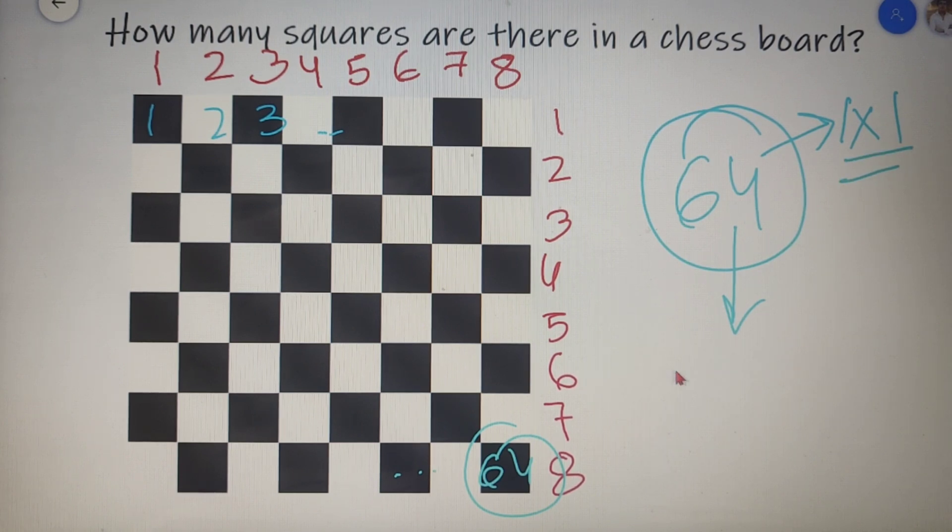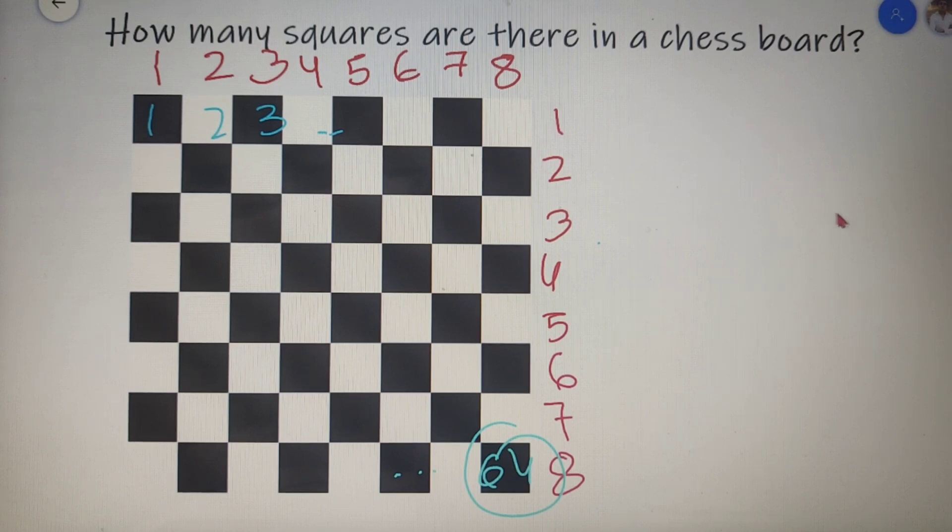It can also have squares of sizes 2 cross 2, 3 cross 3 and all the way up to 8 cross 8. So the question is still unanswered that actually how many squares are there in a chessboard? So let's find out that actually how many squares are there in a chessboard.